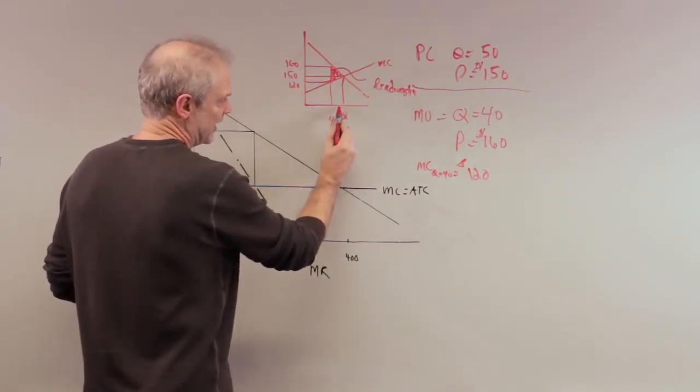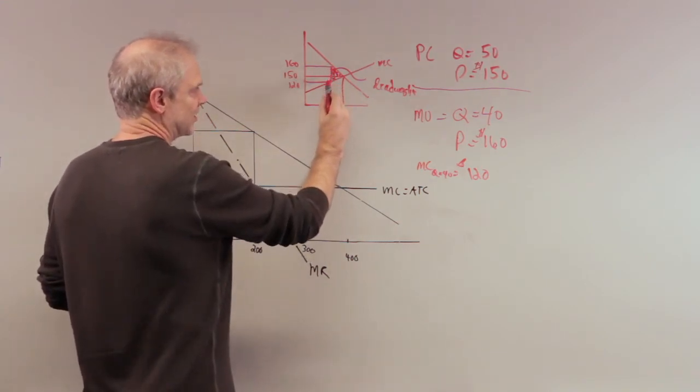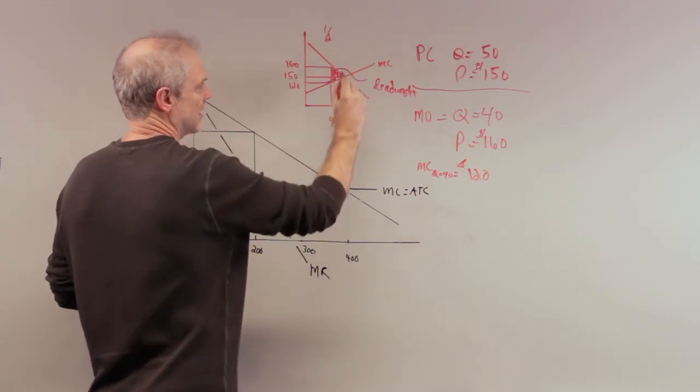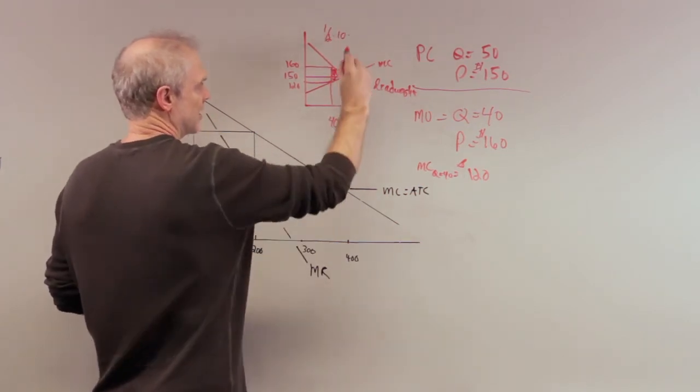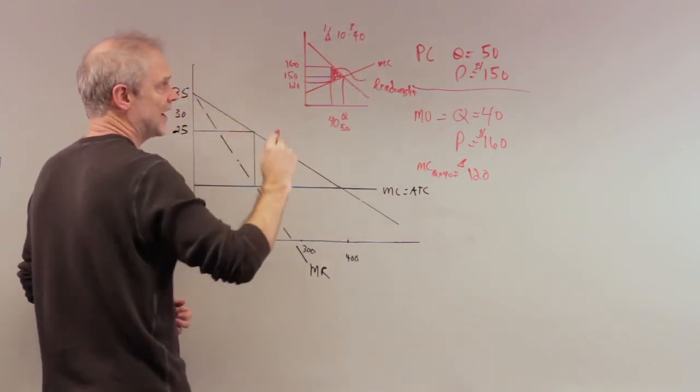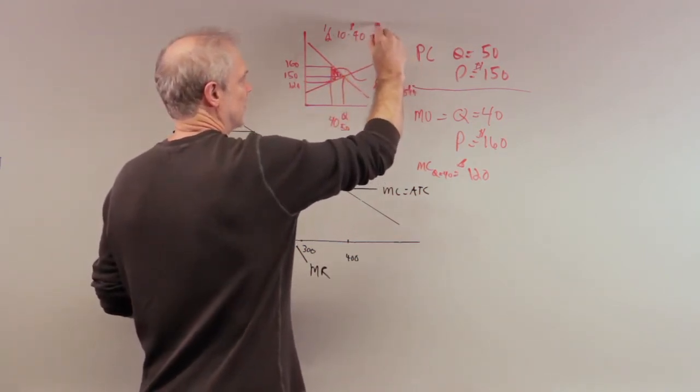So let's call the base right here 10. Let's call this altitude 160 minus 120 or 40. So now we have one half times 10 units times $40, and that's going to be equal to 5 times 40 or is equal to $200.